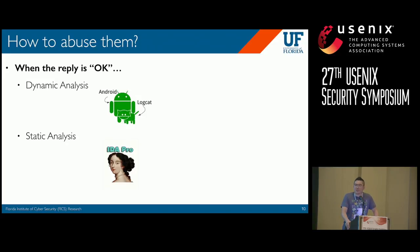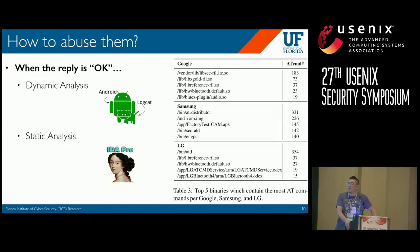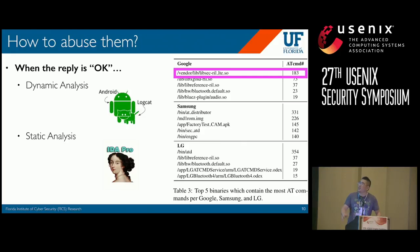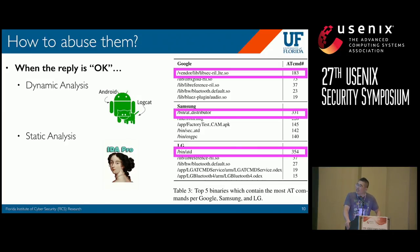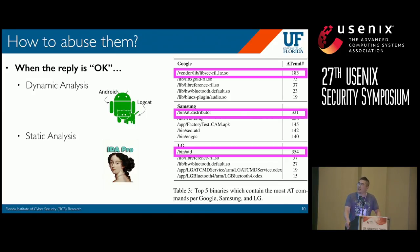While some AT command responses might be informative, a lot would just return OK. In that case, we need to combine static and dynamic analysis for a better understanding and to find vulnerabilities. We started by finding the top five binaries containing the most AT commands, focusing on the top ones: the RIL library for Google, a native daemon called AT Distributor for Samsung, and a native daemon called ATD for LG. We enabled ADB debugging and used Logcat to see how commands flow within the system — both AT Distributor and ATD are the first entry points for AT commands. Then we used IDA Pro to see how certain commands are processed within these native daemons.